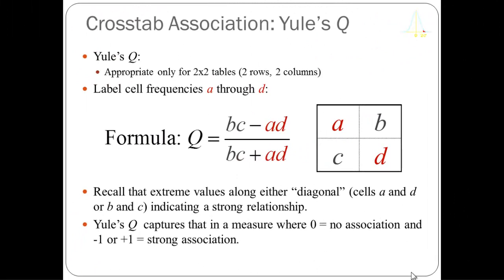One of the nice things about Yule's Q when you have a two-by-two table is that it's very easy to calculate. I've labeled the cells starting from the upper left going right: a, b, c, and d. The formula is the cross products BC minus AD divided by BC plus AD. When there's a high degree of association, values tend to cluster in the diagonal cells, and Yule's Q captures that notion.